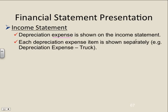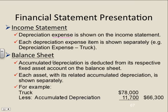Depreciation expense is an expense account, so it goes on the income statement. Each depreciation expense item is shown separately: depreciation expense truck, depreciation expense building, depreciation expense equipment. On the balance sheet, accumulated depreciation is deducted from its respective fixed asset account. For example, if our truck account shows $78,000, and we've accumulated $11,700 in depreciation, subtracting the two gives a net book value of $66,300. Net book value: cost minus accumulated depreciation.